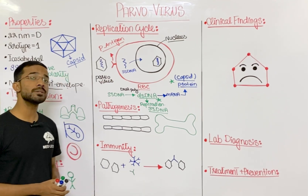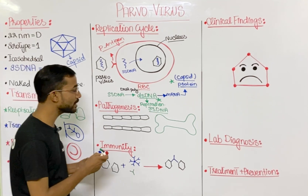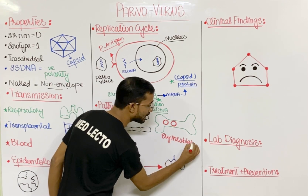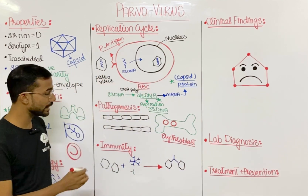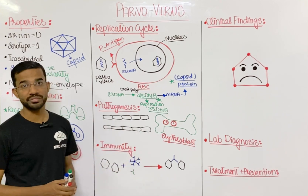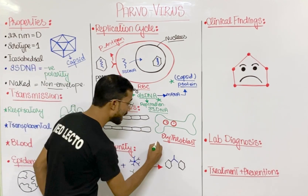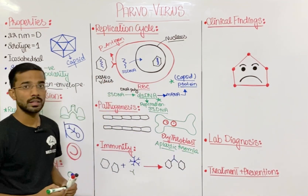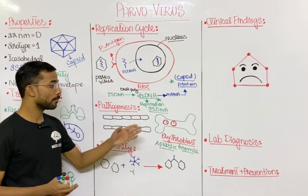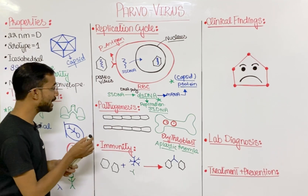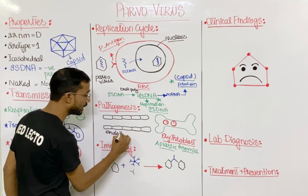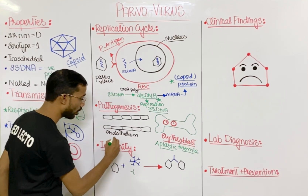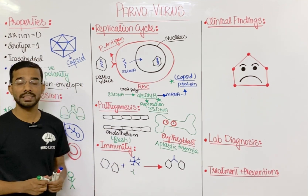Regarding pathogenesis, parvovirus affects two important cell types. First, it infects erythroblasts — immature RBCs in the bone marrow — causing aplastic anemia, in which the erythroid lineage of the bone marrow is reduced. Second, the virus also infects the endothelium of blood vessels, leading to the formation of a rash.